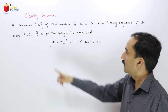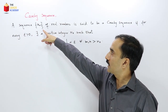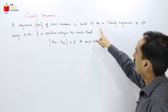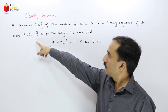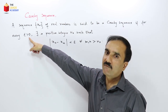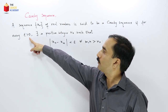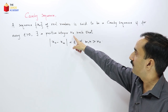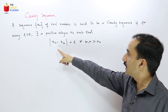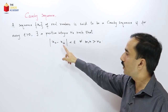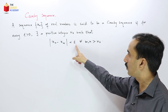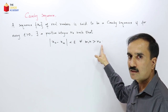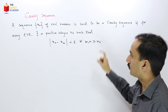So a Cauchy sequence is a sequence xn of real numbers where for every epsilon greater than 0, there exists a positive integer n naught such that |xn − xm| < epsilon for all m and n greater than that positive integer n naught.